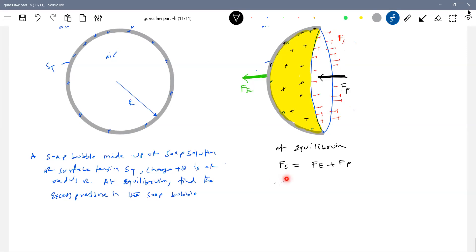2 pi R ST into 2. Why one more 2? It will have two surfaces, inner and outer surface. Bubble will have two surfaces. That's right.